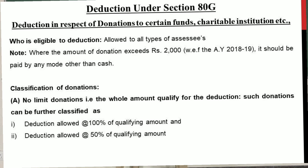Section 80G is applicable where the amount of donation exceeds rupees 2000 — it should be paid by any mode other than cash. Donations up to 2000 rupees per month can be paid in cash and still qualify for the deduction.